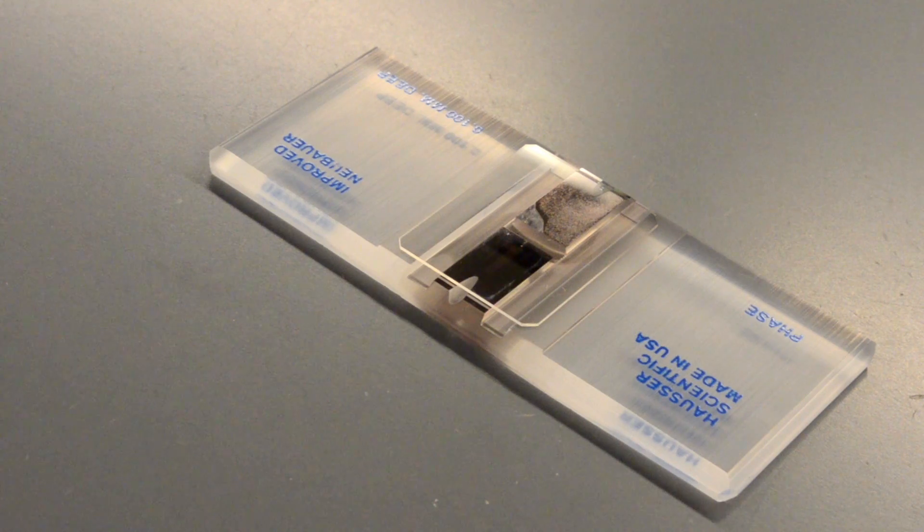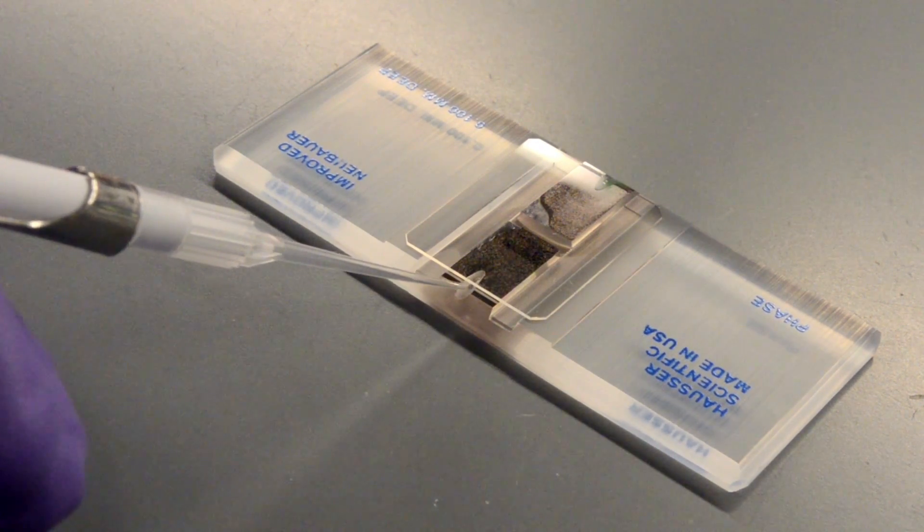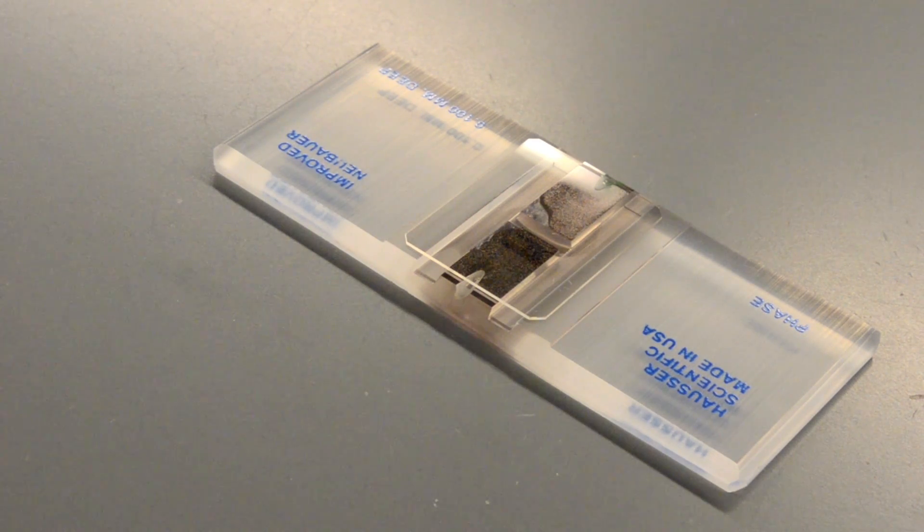To start, you add 10 microliters of a well-mixed cell suspension to the edge of the coverslip, where capillary action sucks it up under the coverslip. I'm using a mixture of small beads to demonstrate.